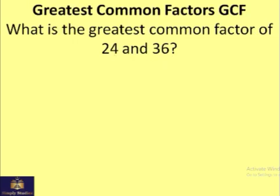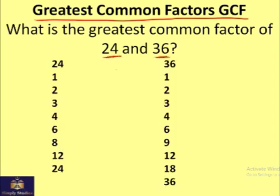The most useful concept in calculations is the GCF, or greatest common factor. If we list all factors of 24 and 36, we can identify that the greatest common factor is 12. But listing all factors isn't always the easiest method, so let's use another trick.